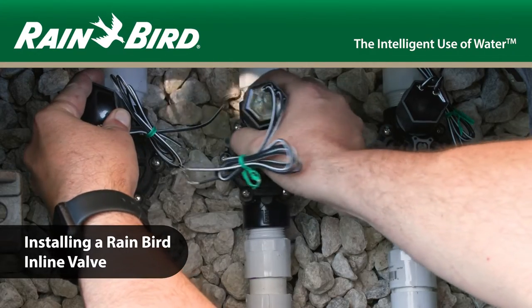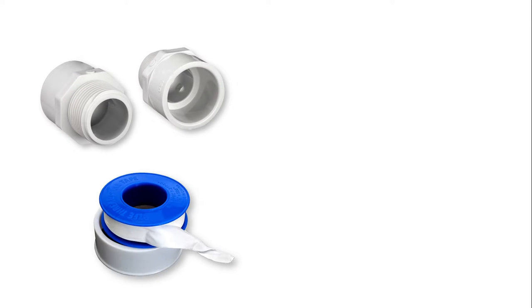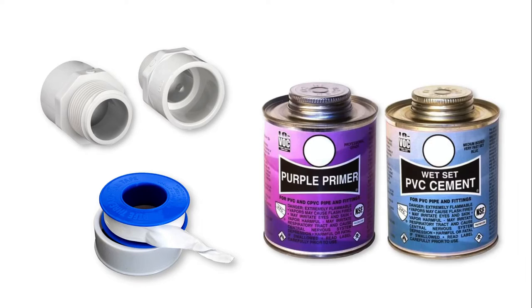Installing a Rainbird inline valve is easy. You're going to need threaded pipe adapters, a roll of PTFE thread seal tape, PVC primer, and glue.